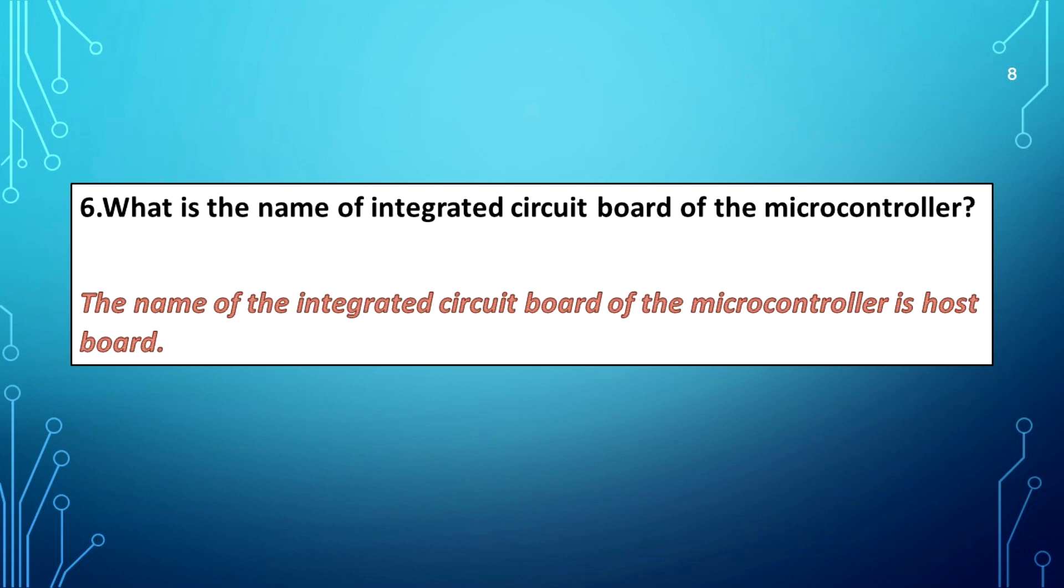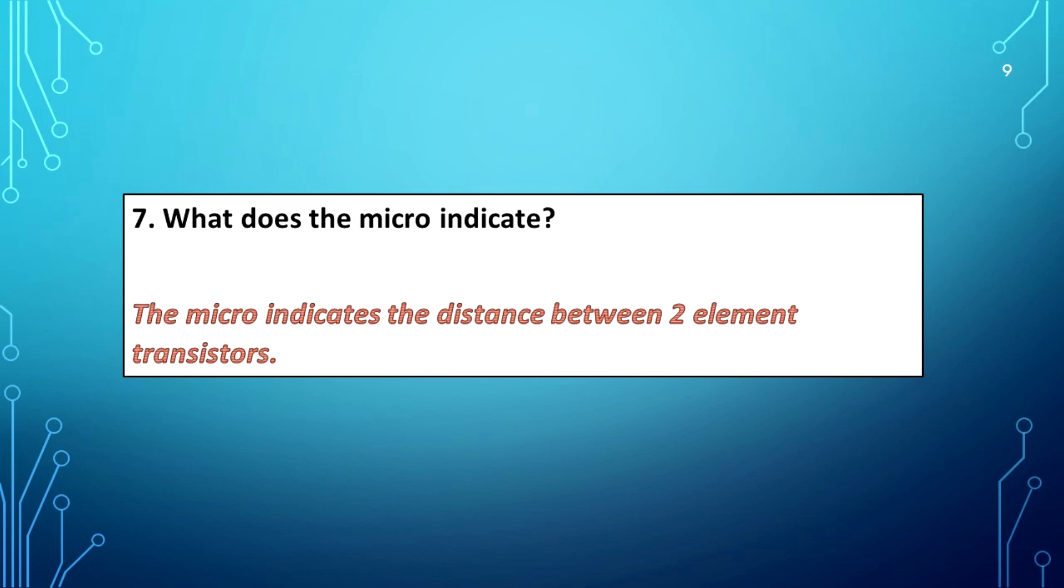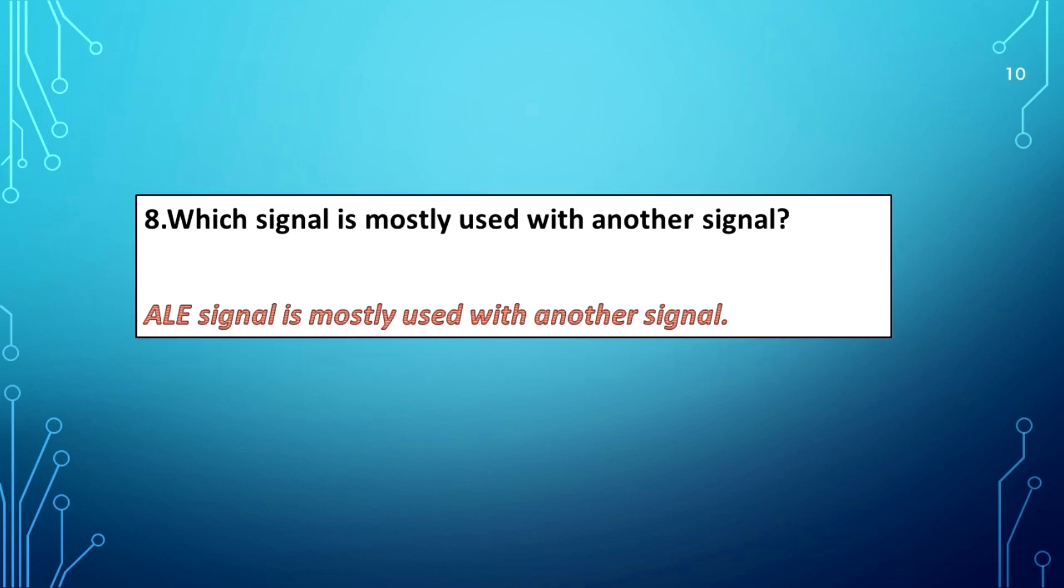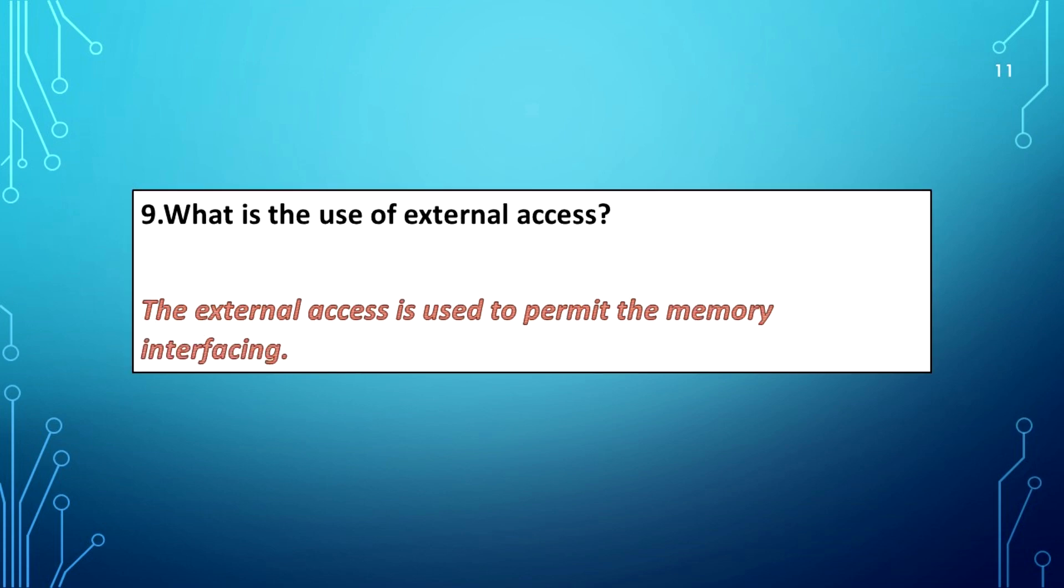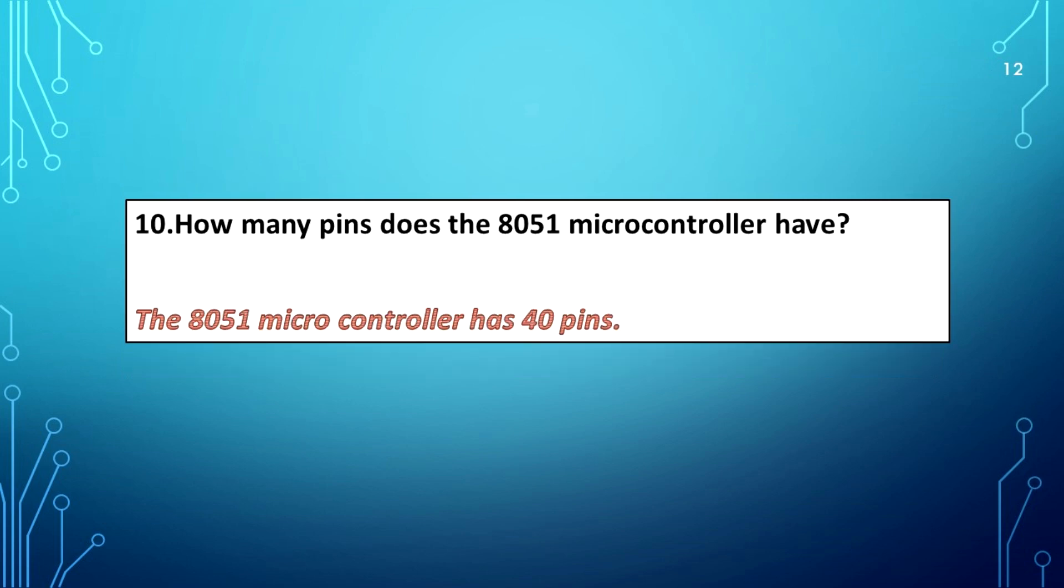What does the micro indicate? The micro indicates the distance between two element transistors. Which signal is mostly used with another signal? ALE signal is mostly used with another signal. What is the use of external access? The external access is used to permit the memory interfacing.